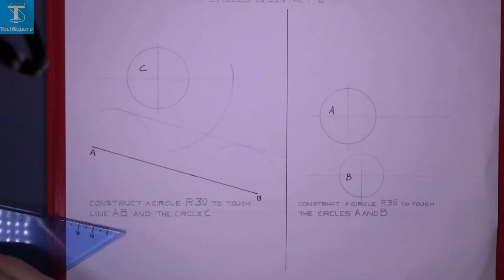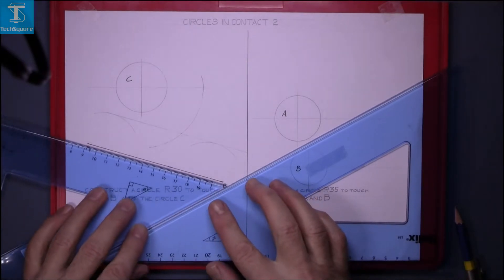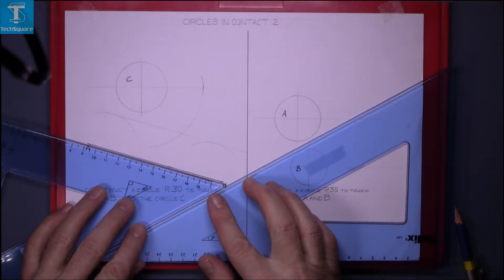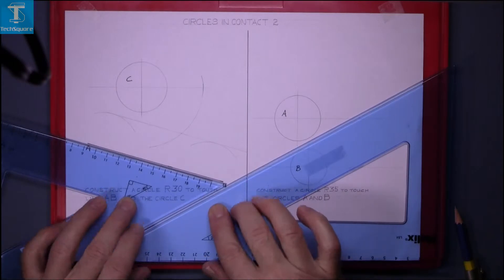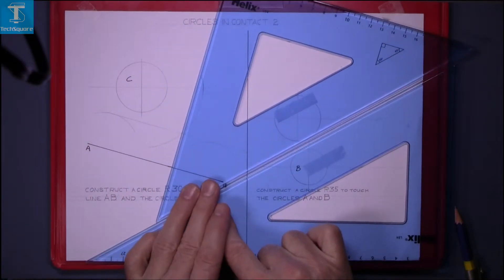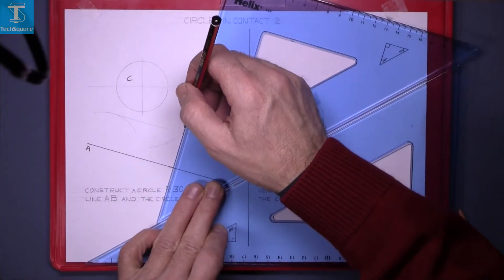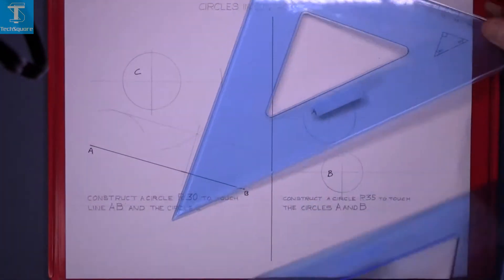Now we have to get the points of contact, so you can use this method here which is set up the two set squares, line up with the line and then slide that set square forward until you get to the center point and draw your line. And that gets you to the point of contact.